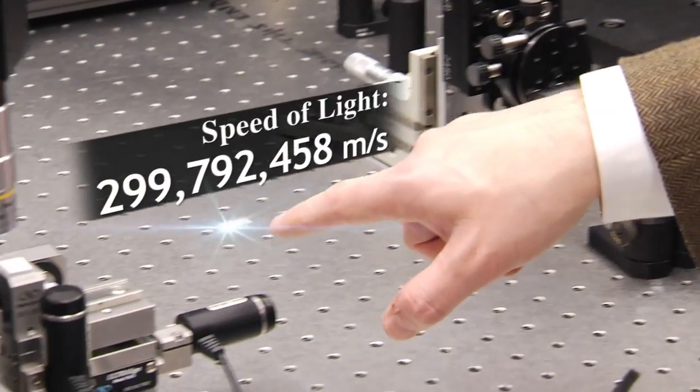Computers aren't really getting any faster. They're still at two or three gigahertz and the reason for that is that electrons just can't move fast enough, but light can move at the speed of light.